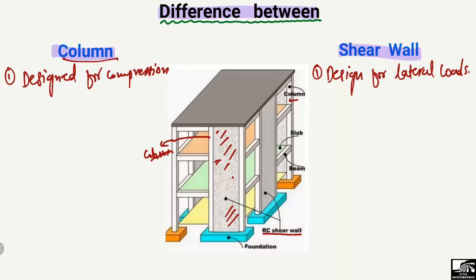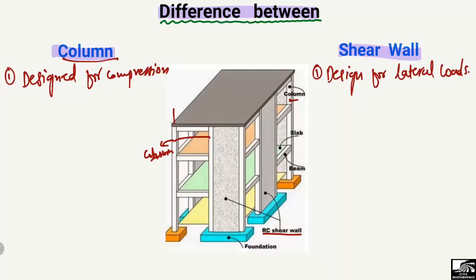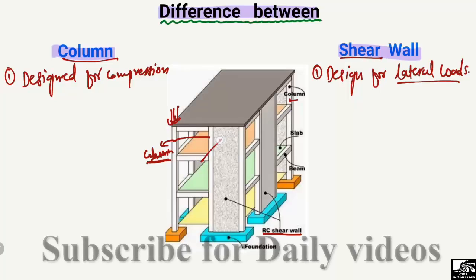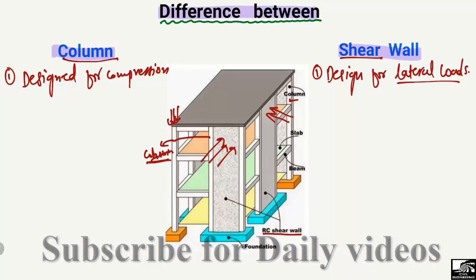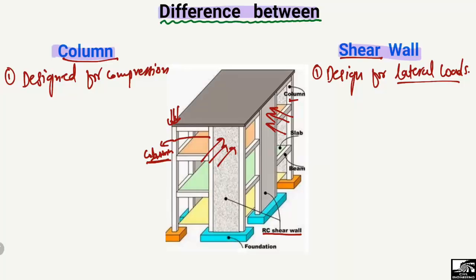Lateral loads means the loads coming from wind or from an earthquake — most of these loads are taken by the shear walls. In the case of columns, they are mostly responsible to take the compression load acting on the structure. Shear walls, in most cases, are designed for lateral loads; if a wind load or earthquake load is coming, these structural members are responsible to take those lateral loads.